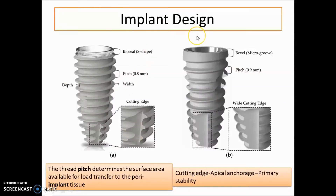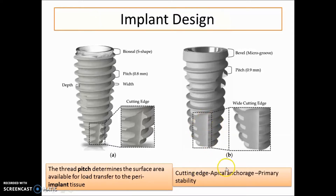Let's start with basic implant design. The implant has a bio-seal which is normally S-shaped, a pitch of 0.8 mm or 0.9 mm, a bevel considered as a micro-groove, and a cutting edge at the apex. The pitch determines the surface area available for load transfer to the implant tissue, and the cutting edge provides apical anchorage responsible for the primary stability of the implant.